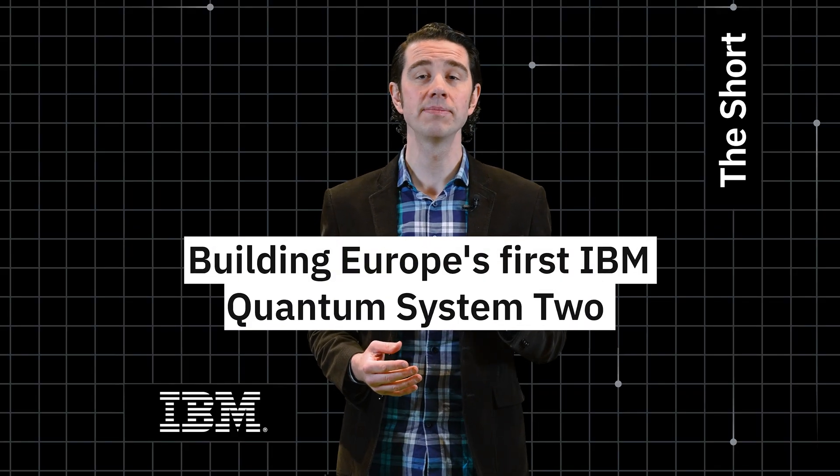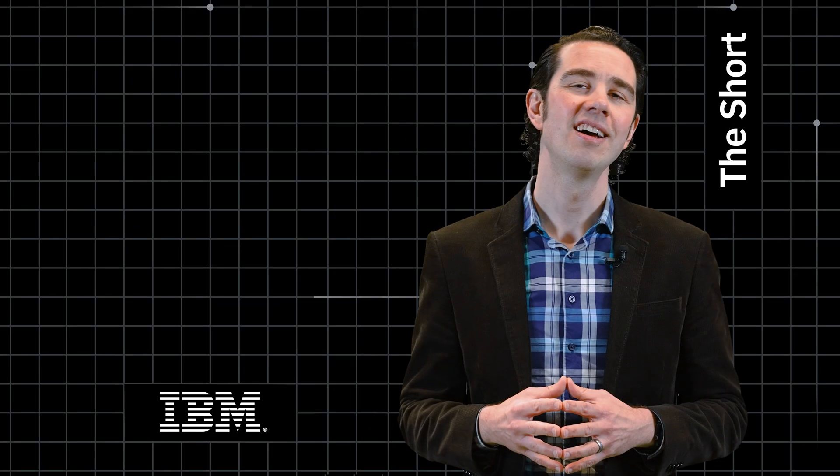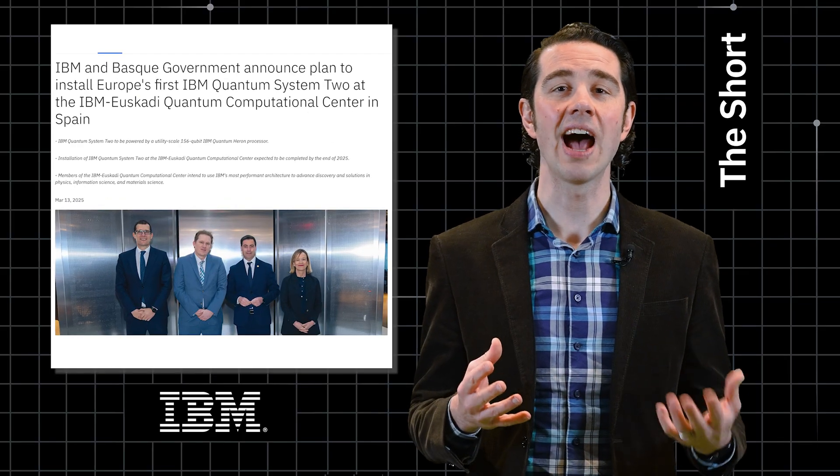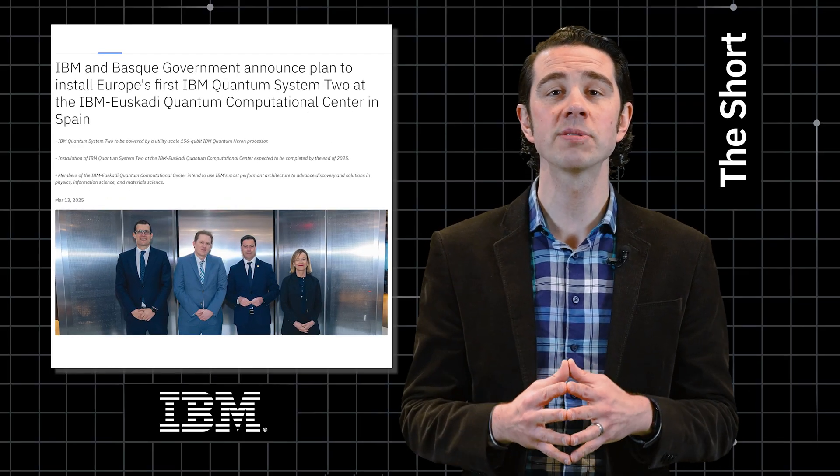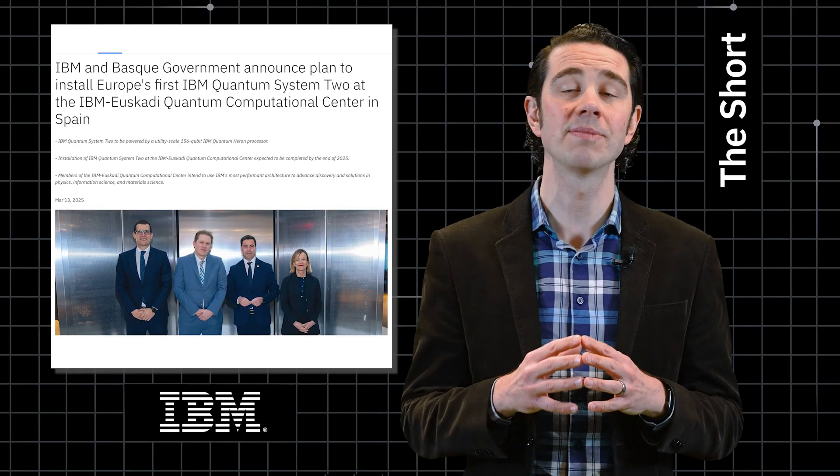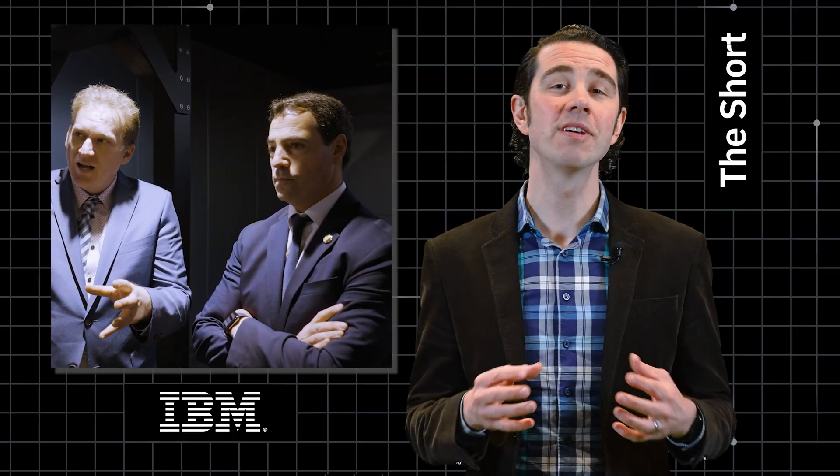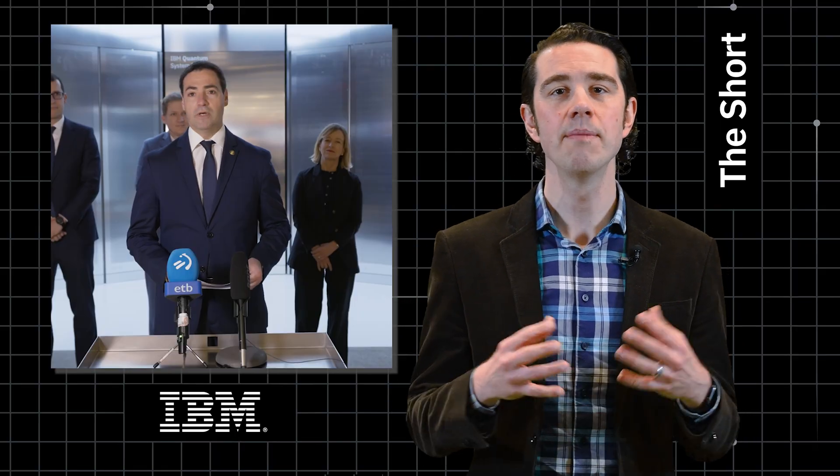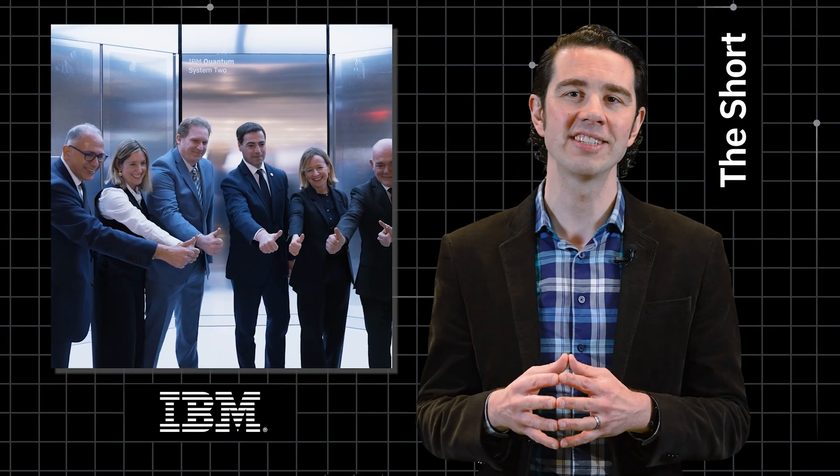Europe's first IBM Quantum System 2 is in El Camino. Last week, the Basque government and IBM announced plans to install Europe's first ever IBM Quantum System 2. The news came with a visit to our New York headquarters by Basque country president, Mr. Iman El Pradeles, and other dignitaries.